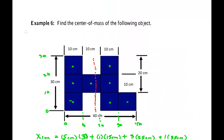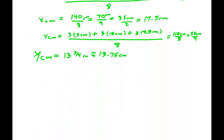So the center of mass is at approximately (17.5, 13.75) cm. The y value is slightly below the geometric middle because the lower part of the shape pulls it down. That point is where you would balance this object. It also turns out to be the ideal axis of rotation for spinning the object most easily, which is one reason to study center of mass — it connects directly to rotations in the next chapter.